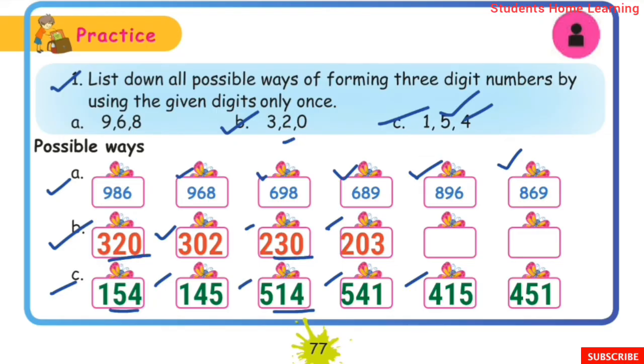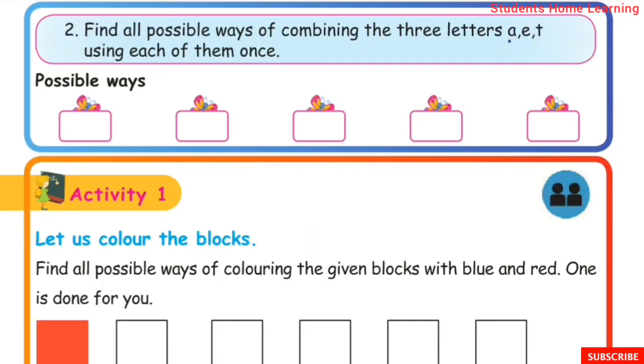Find all possible ways of combining the 3 letters A, E, T using each of them only once.